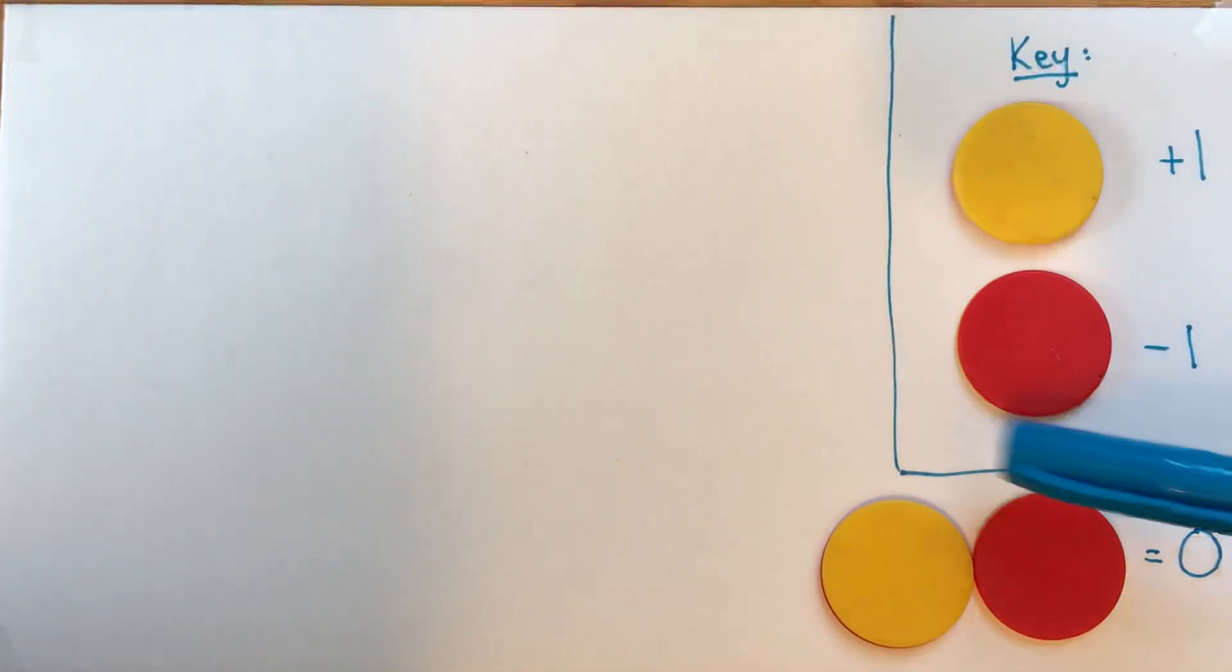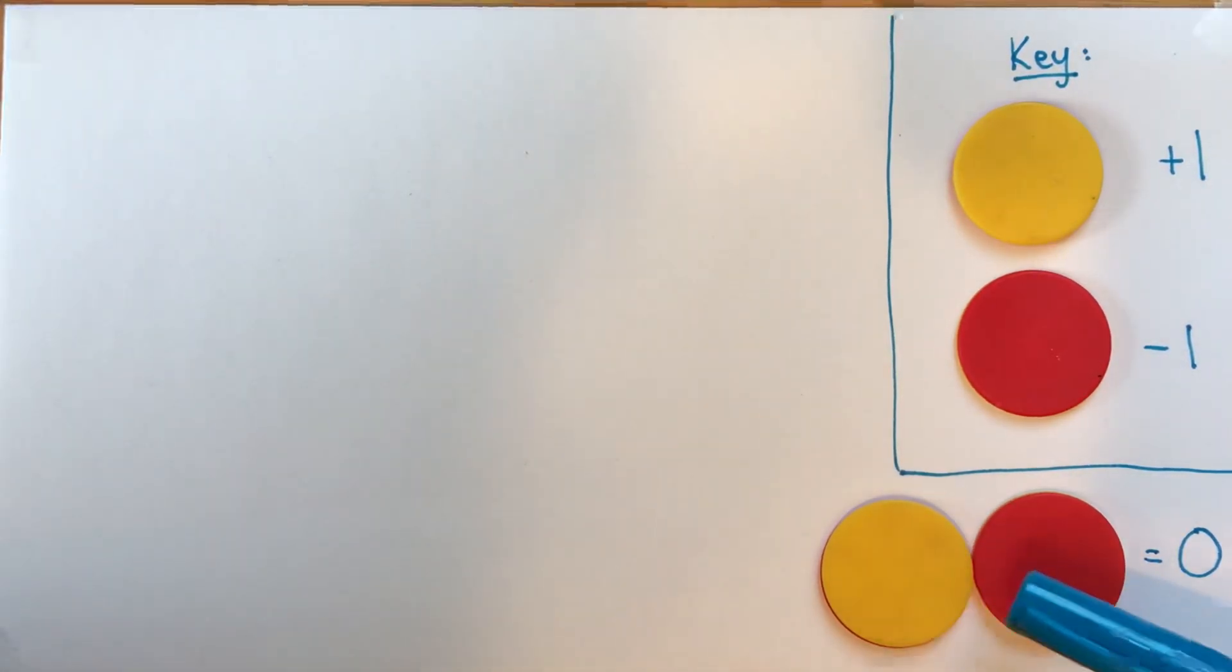So I didn't put this in the key, because the key is something I just decided that yellow was going to be positive and red is negative, or other people might have decided, it's just a decision. But it's a mathematical fact that a positive one and a negative one together make zero.